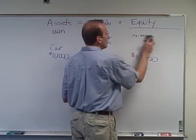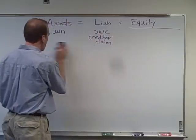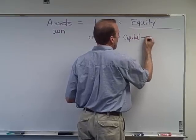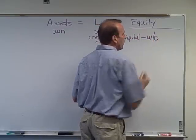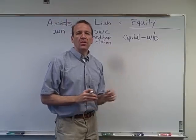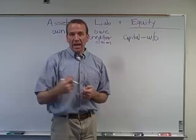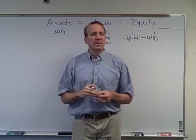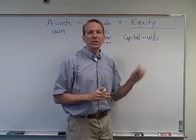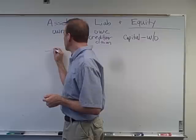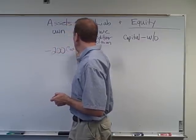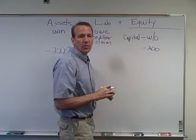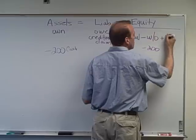Equity is the owner's claim and can be broken down into four components. First is the capital account, which tracks what the owner contributes to the business. Second, we subtract out withdrawals — if you're the owner, you can take cash out of the business. For example, if we took $200 out, we'd reduce cash by $200 and record a negative $200 withdrawal, which reduces your equity in the business.